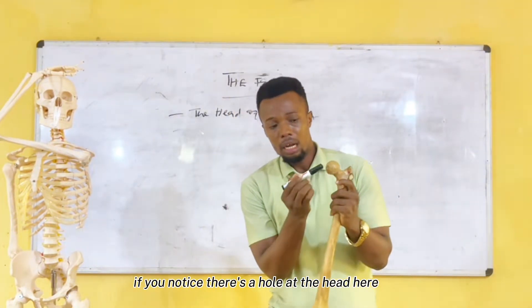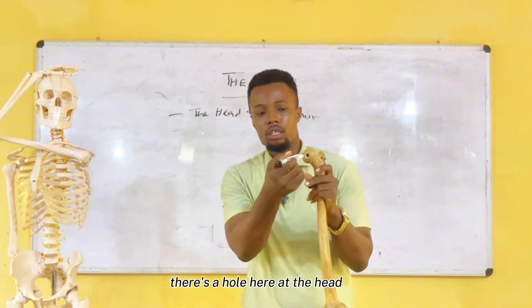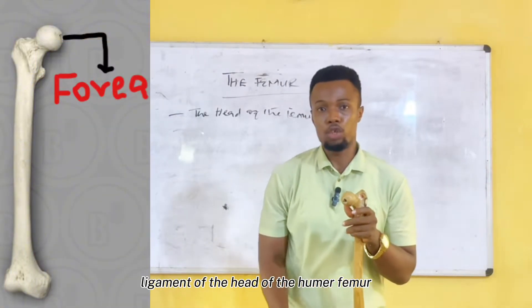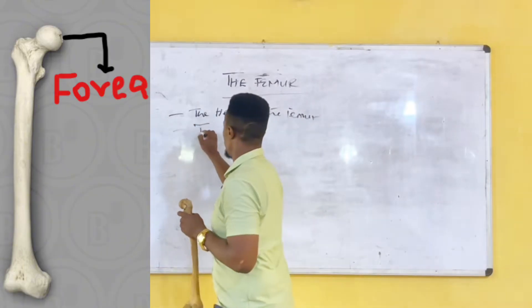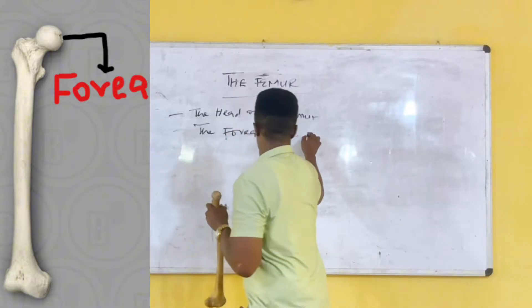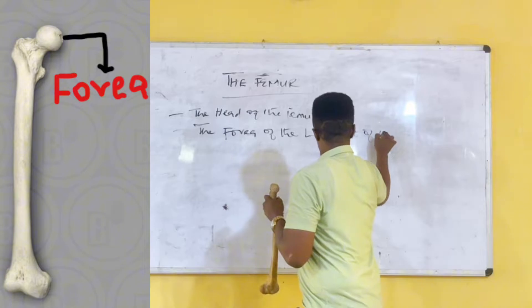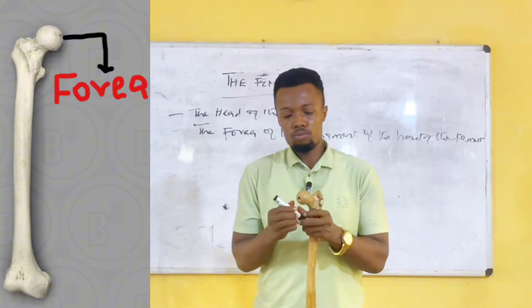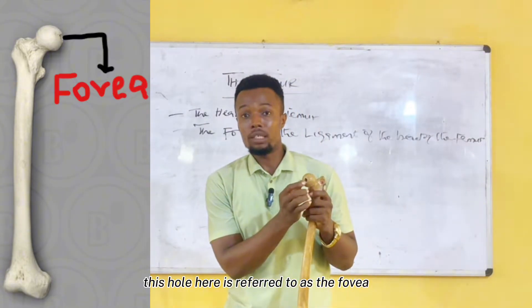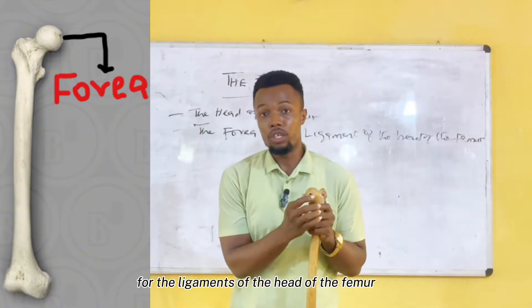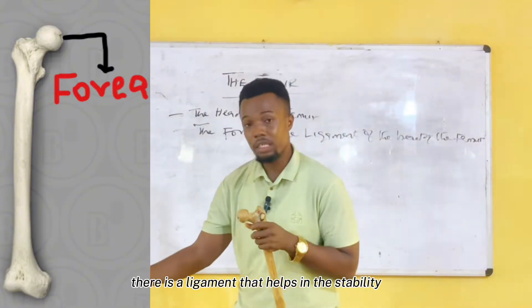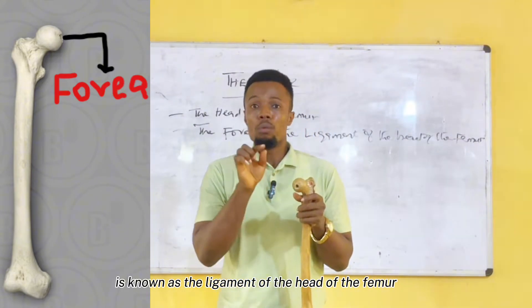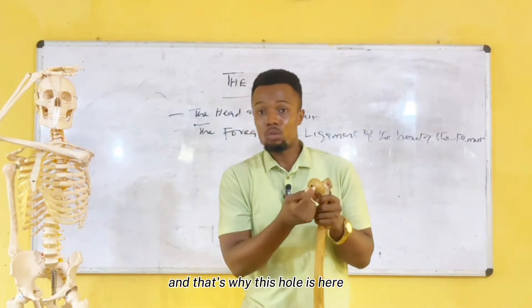There is a hole at the head here. This hole is referred to as the fossa for the ligament of the head of the femur. There is a ligament that helps in the stability of the hip joint — that ligament is known as the ligament of the head of the femur. This fossa gives attachment to that ligament, and that is why this hole is here.